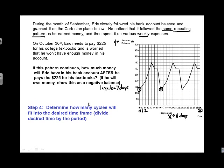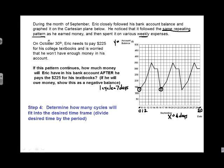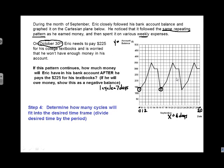We have to determine how many cycles will fit into the desired timeframe. Well, what's our desired timeframe here? Well, we want to know where he's going to be on October the 30th. Now, if our graph showed October 30th, this would be a pretty easy problem. We could just read it off the graph. Unfortunately, it doesn't.